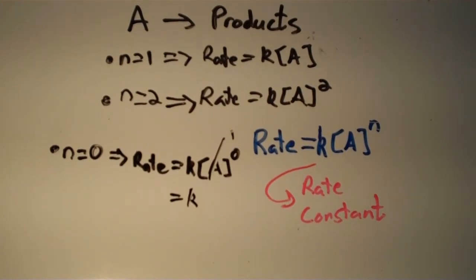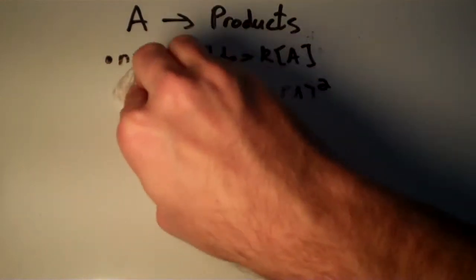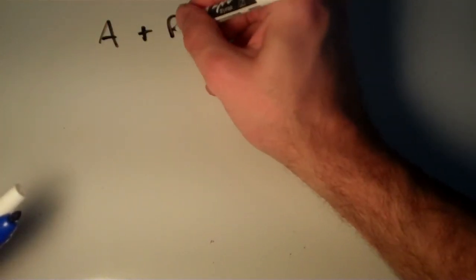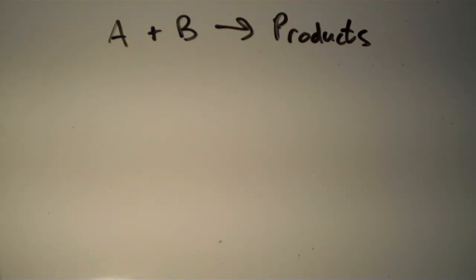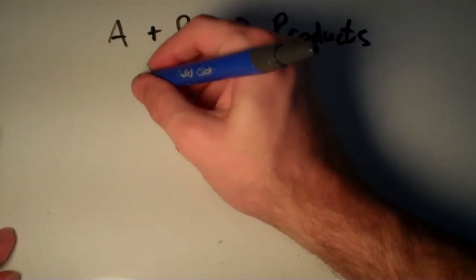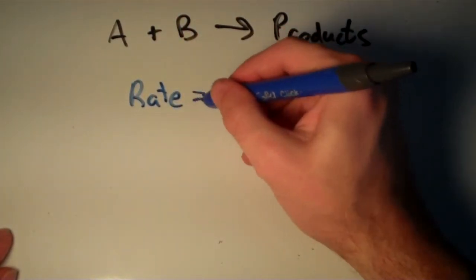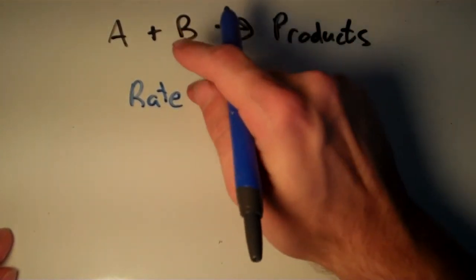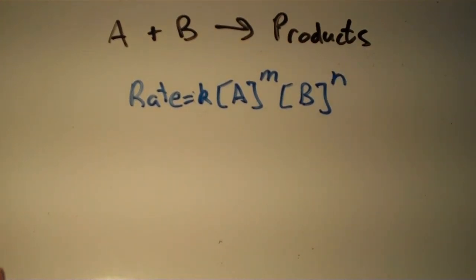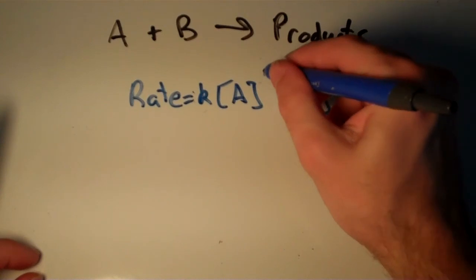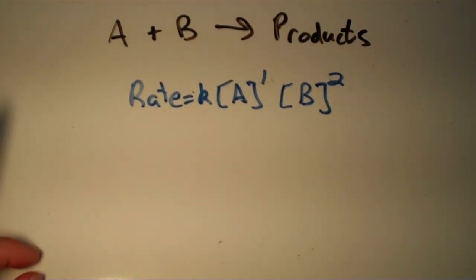Now suppose we have the reaction A plus B yields products, meaning we have two reactants. To express the rate law for this reaction, we say the rate is equal to K times the concentration of A to the m times the concentration of B to the n. For example, if the reaction is first order with respect to A and second order with respect to B, this is how the rate law would work.